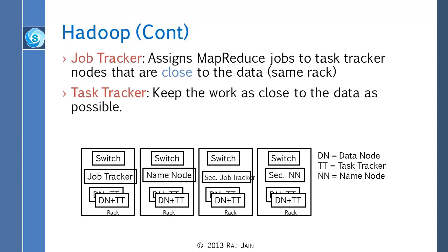The task tracker and the data node are one and the same — it says Dn plus Tt on the slide, meaning you really want the data node and task tracker to be on the same node. And that is what is possible with networking now, which was not possible before.